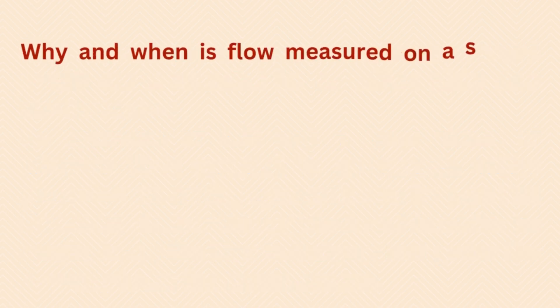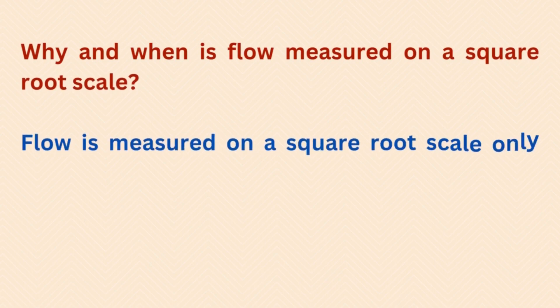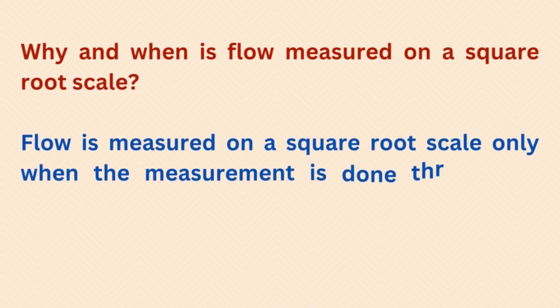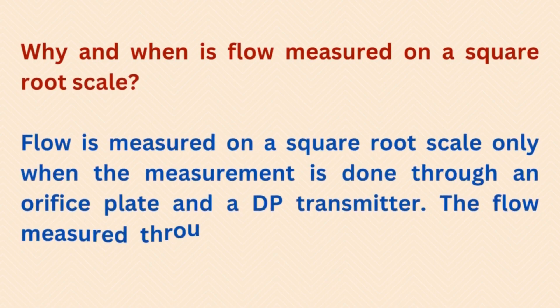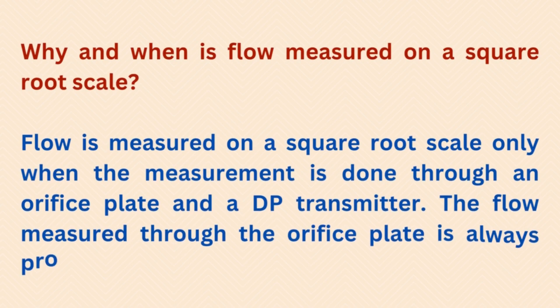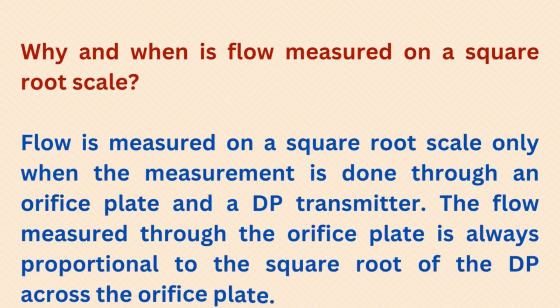Why and when is flow measured on a square root scale? Flow is measured on a square root scale only when the measurement is done through an orifice plate and a DP transmitter. The flow measured through the orifice plate is always proportional to the square root of the DP across the orifice plate.